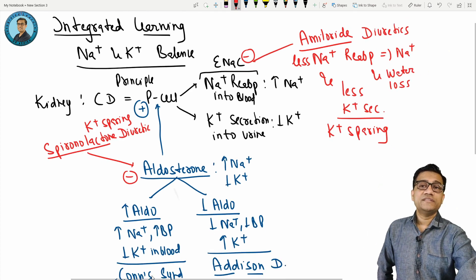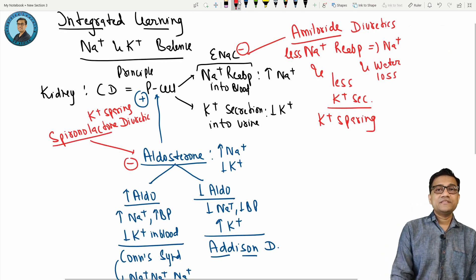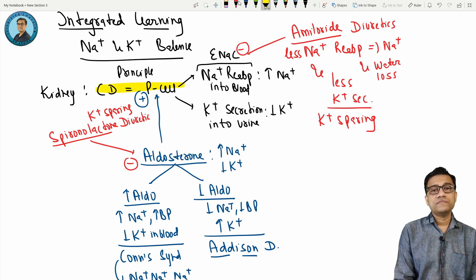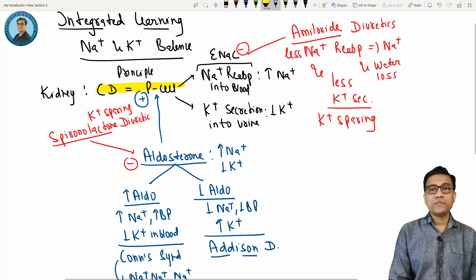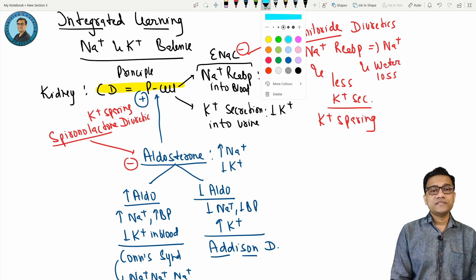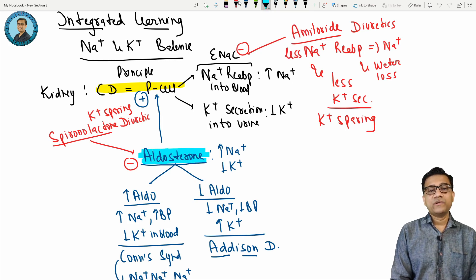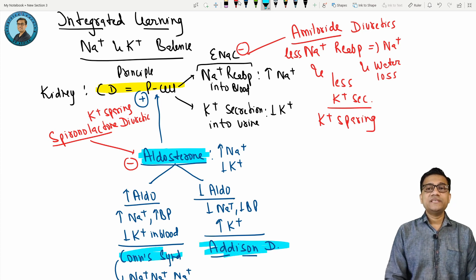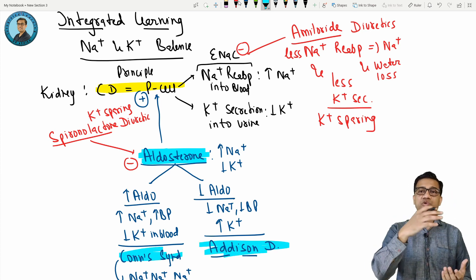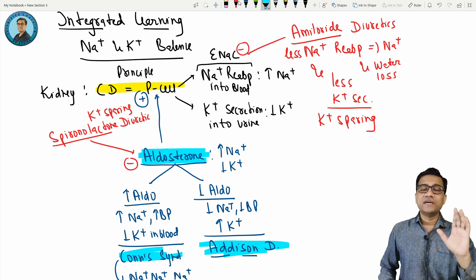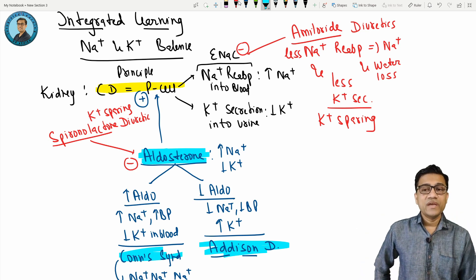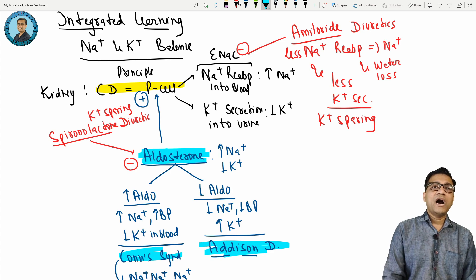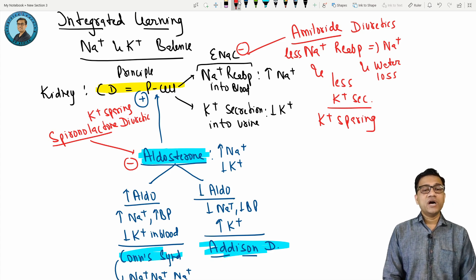See this diagram. This is physio, this would be patho and medicine - Addison's and Conn's. And this red one is the pharma. So physio, patho, pharma all club in a single chart and diagram. Finally, how will you treat? Obviously for Conn's, treatment would be to block it. Treatment is spironolactone.